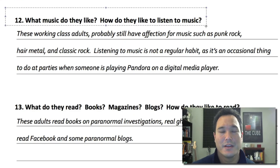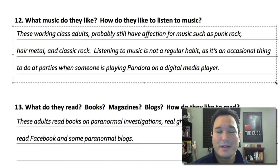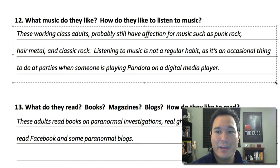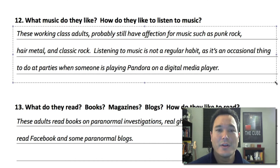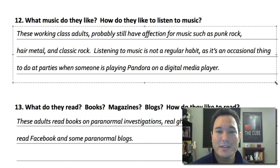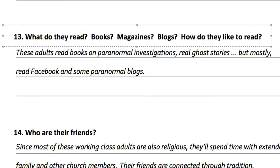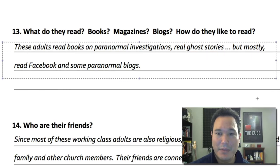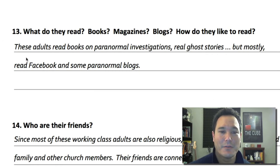Number twelve: what music do they like and how do they like to listen? These working-class adults probably still have affection for punk rock, hair metal, and classic rock. Listening to music is an occasional thing — they do it at parties when someone's playing Pandora on a digital media player. Number thirteen: what do they read? Books on paranormal investigation, real ghost stories, but mostly they read Facebook and some paranormal blogs. So I realize I'll have to focus on Facebook as my main social media outlet to connect with this audience.